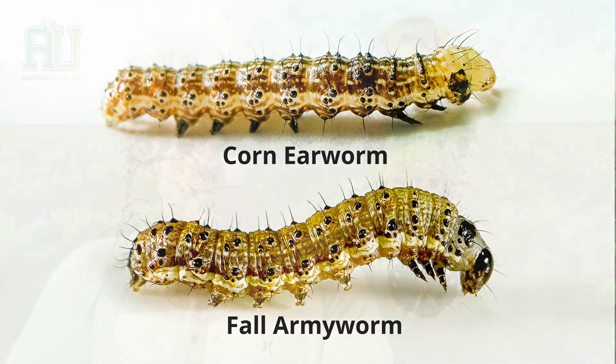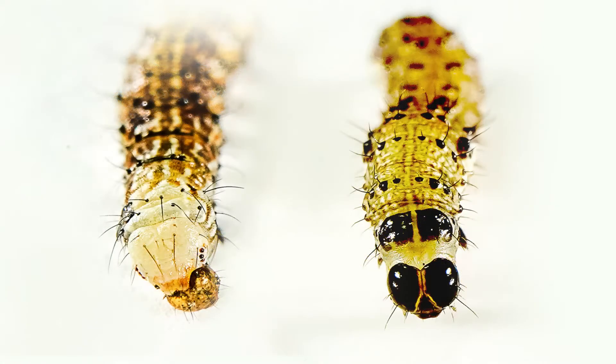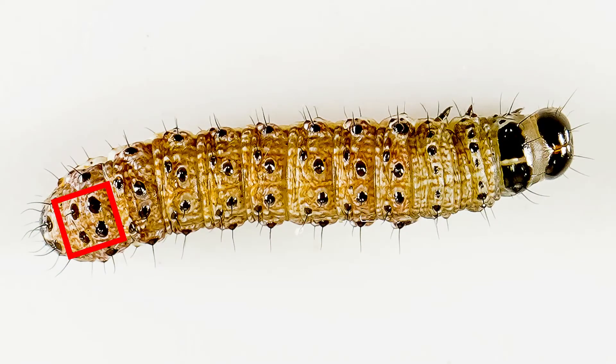First off, the most important would be the inverted Y shown here on a fall armyworm. This is going to be the truest way to know what species you're dealing with. If they're in the very beginning stages, first or second instar, it might be difficult to see the inverted Y, in which case the second to last segment of their body you will see four larger dots in a square pattern shown here.